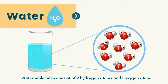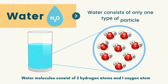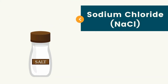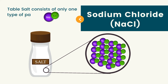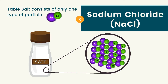Water molecules consist of two hydrogen atoms and one oxygen atom. If we zoom in on water, all you see is a bunch of water molecules and nothing else. Since water consists of only one type of particle, it is considered a pure substance. I have here sodium chloride, commonly known as table salt. Zooming in on the table salt, we can see sodium and chlorine that are chemically bonded to form the compound sodium chloride. All we can see is a bunch of sodium chloride and nothing else. Since table salt consists of only one type of particle, it is considered a pure substance.